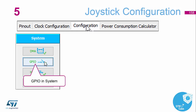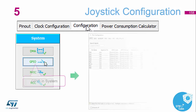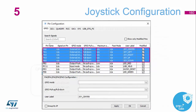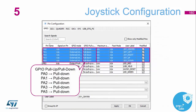Now we need to go and check the GPIO configuration — there are all our interrupts selected. We also need to add a pull down for each of our interrupt pins.